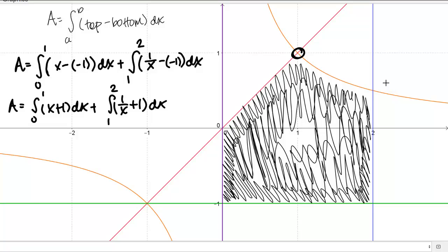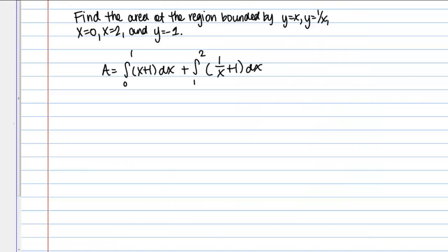Let's go back to the board and actually calculate these integrals. If I take this first integral, I should get one half x squared plus x evaluated from 0 to 1, plus, and then for my second integral, the anti-derivative of 1 over x is the natural log of the absolute value of x and then plus x evaluated from 1 to 2.